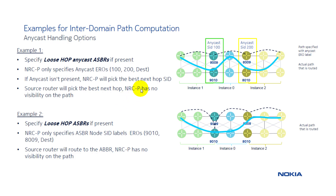The NSP computes an inter-domain path across multiple domains using specific options: loose hop anycast ASBRs, and the fallback specification of loose hop ASBRs. Stay tuned for more videos on inter-domain connection points.